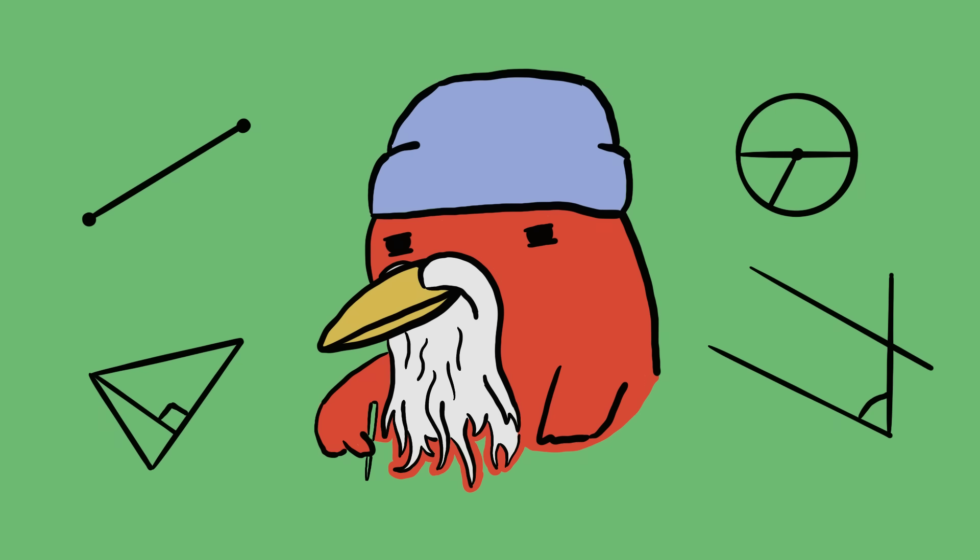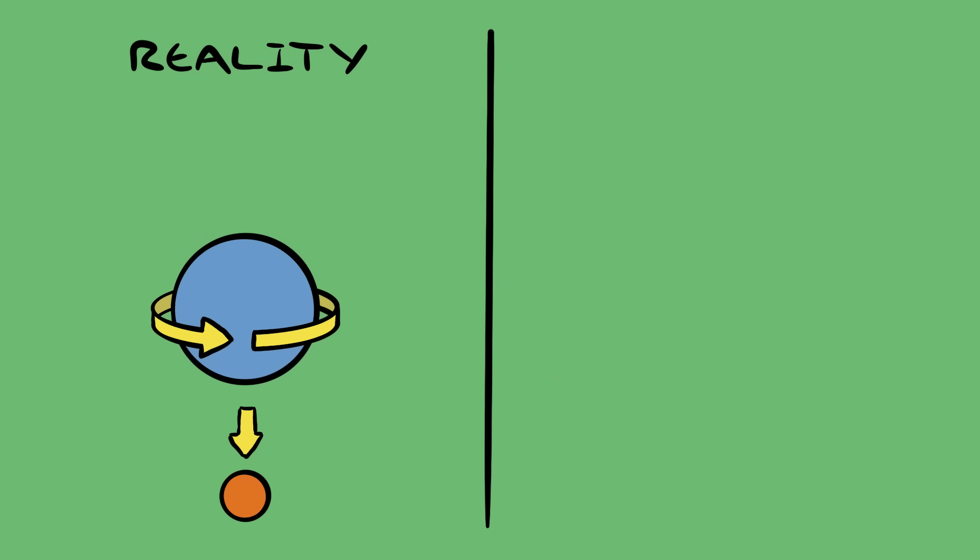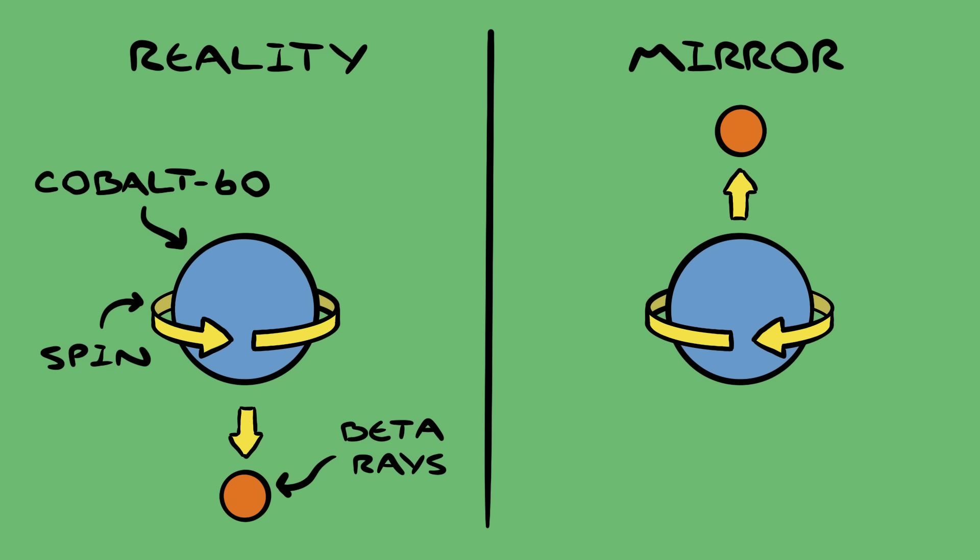But modern physics has pointed out a few important differences. In 1956, the Wu experiment demonstrated that all known fundamental forces except the weak interaction are symmetric under reflection. That means that if you performed a mirror reflection on our universe, it would be different. So that's one less symmetry than the Euclidean group.